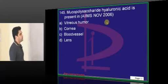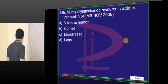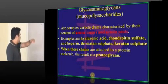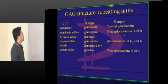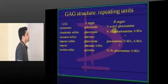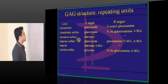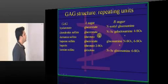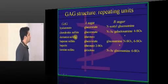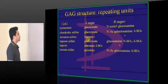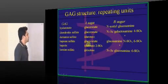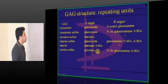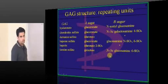Where is hyaluronic acid present? Hyaluronic acid is mostly present in vitreous humour. Hyaluronic acid is made up of glucuronic acid and N-acetyl glucosamine. Summary: glucuronate with galactosamine is chondroitin sulfate; galactosamine with iduronate is dermatan sulfate; glucosamine with glucuronate is heparin sulfate; glucosamine with iduronate is heparin. Keratan sulfate has no uronic acid — it is galactose plus glucosamine.